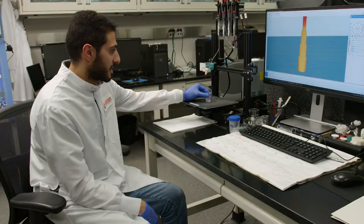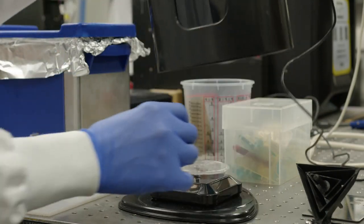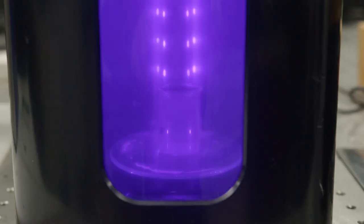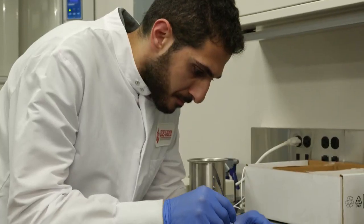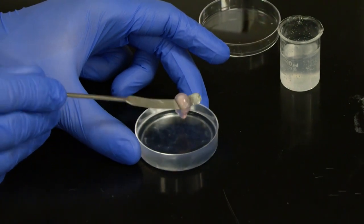And after printing, we will remove the support bath, cross-link it under UV light so that the hydrogel will harden and you have a final strong structure that you can extract from the bath. And then incubate in the incubator and cell media so that the cells will be proliferating and growing with high viability.